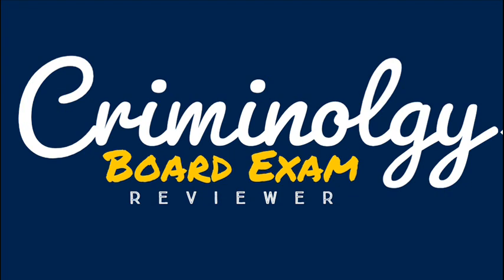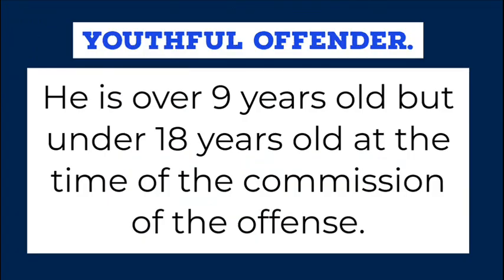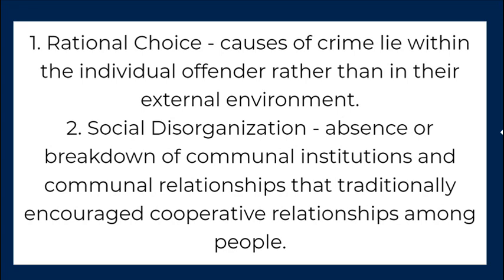Criminology board exam reviewer: Juvenile delinquency. Youthful offender — he is over nine years old but under 18 years old at the time of the commission of the offense. Crime theories applicable to juvenile delinquency: 1. Rational choice — causes of crime lie within the individual offender rather than in their external environment.